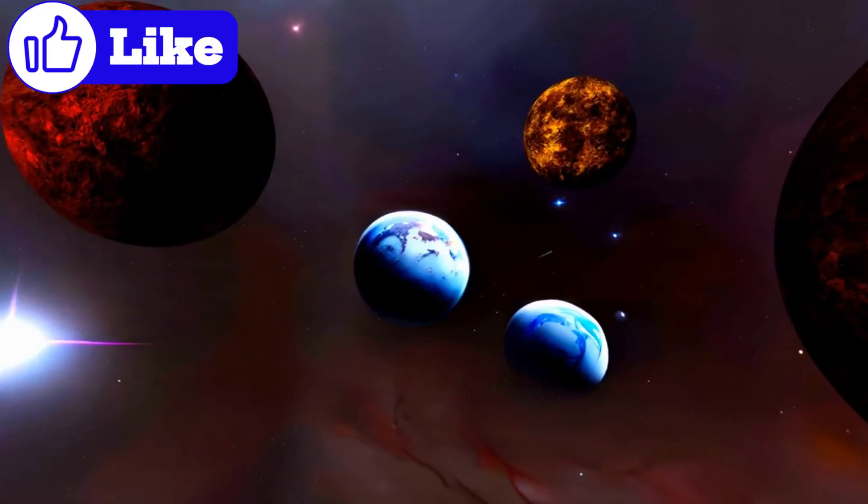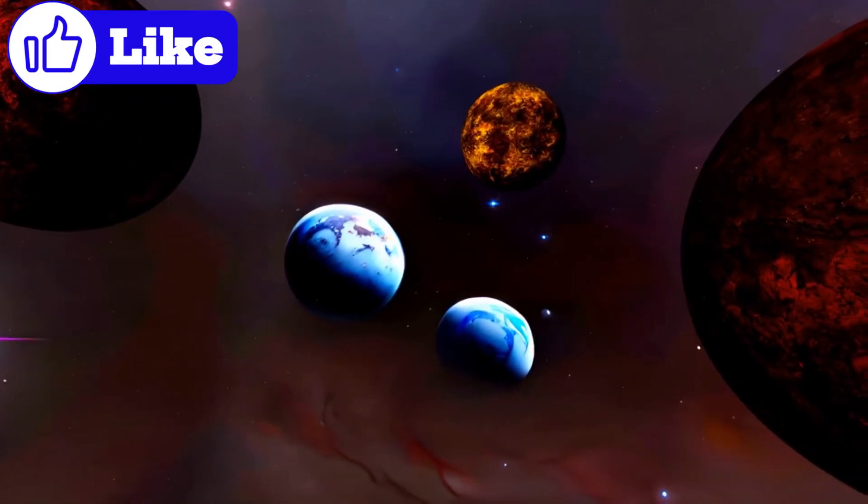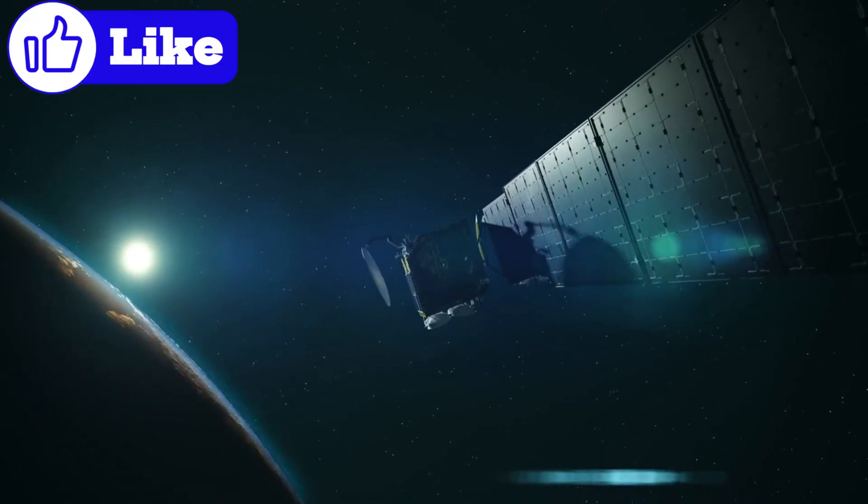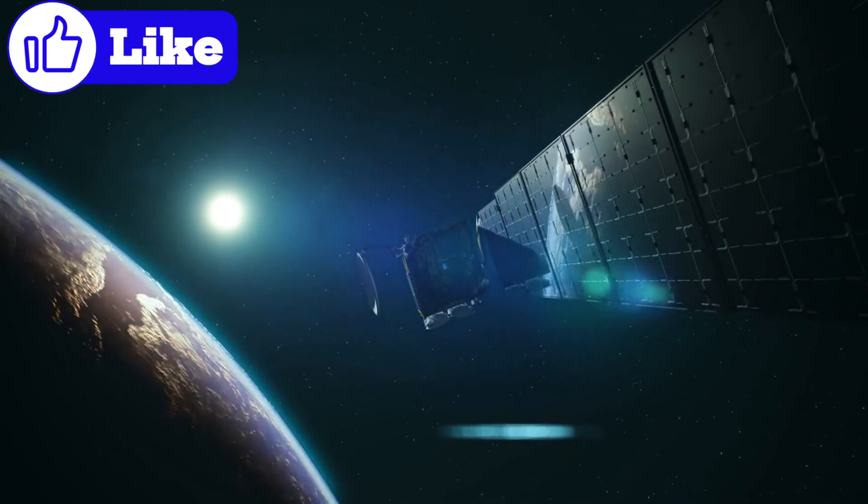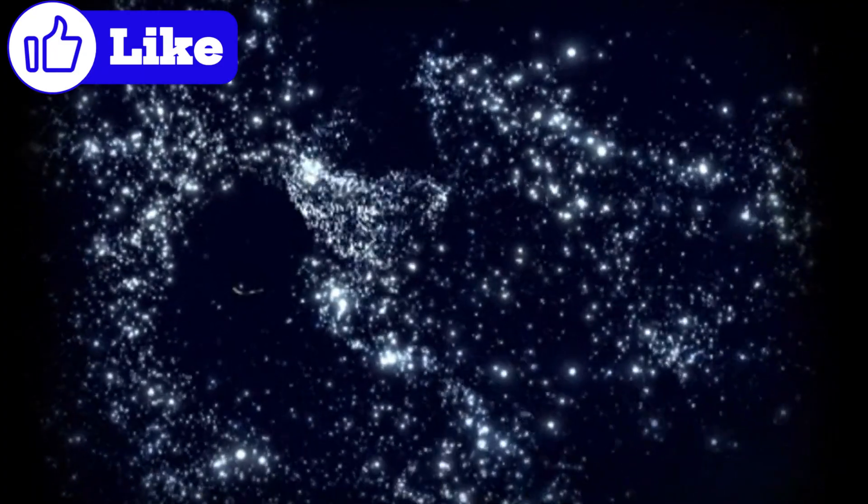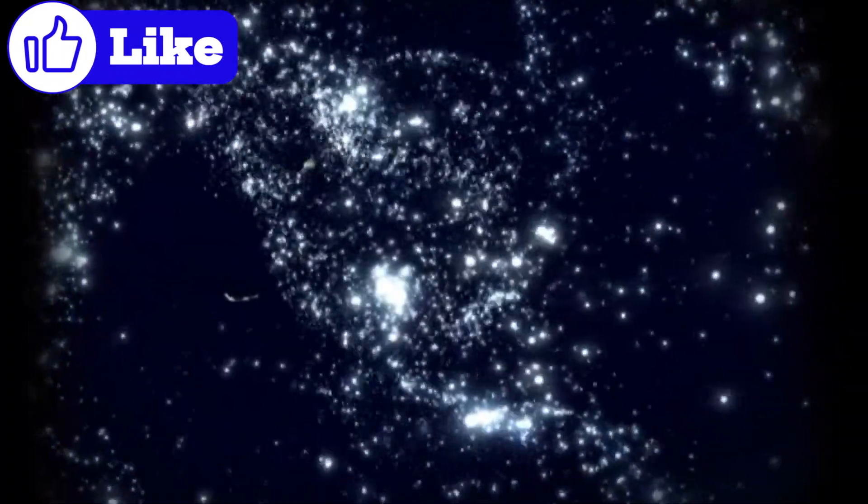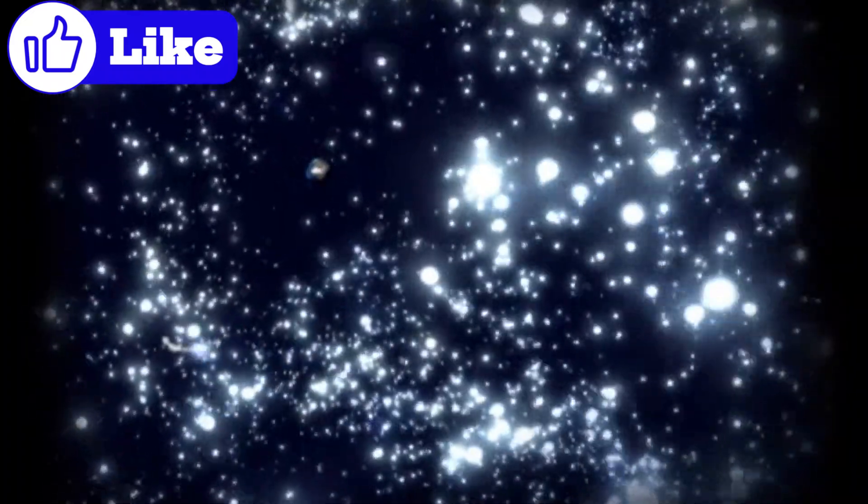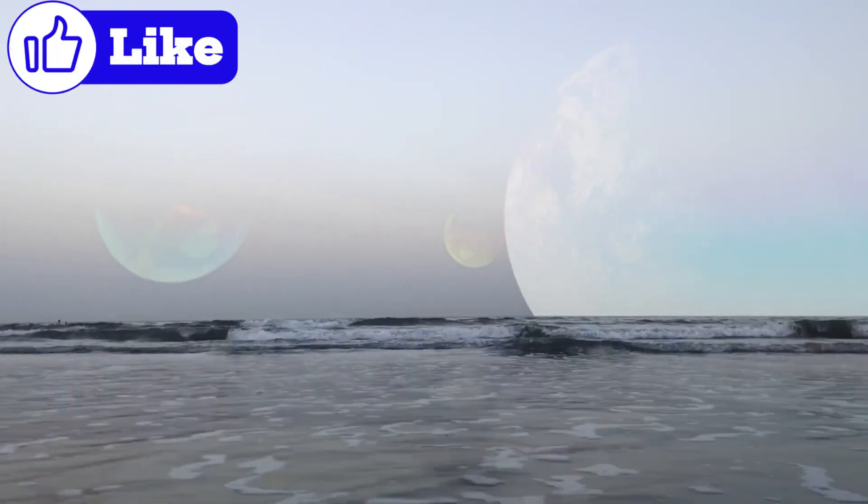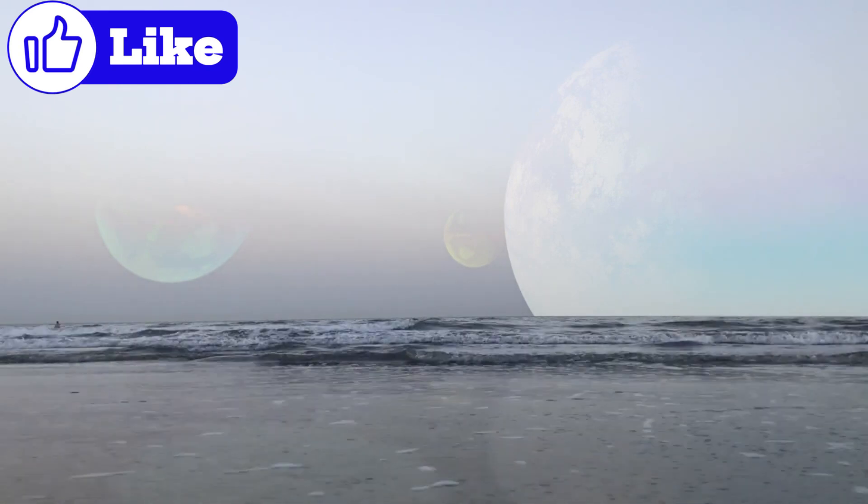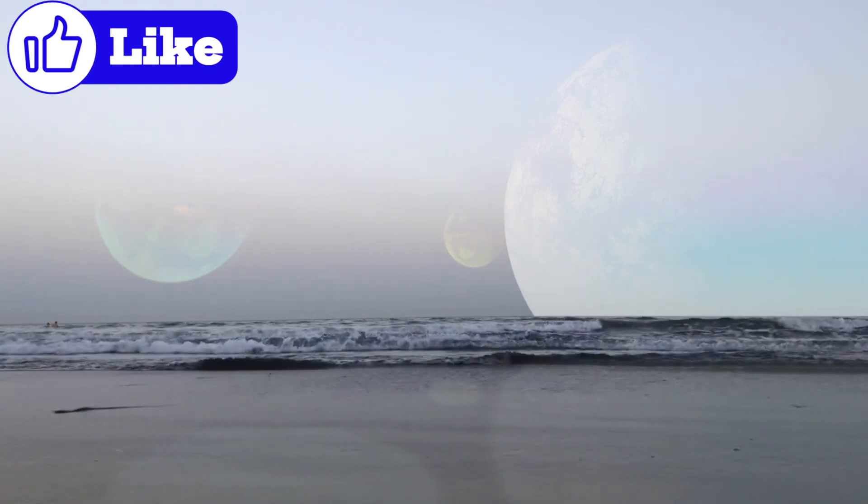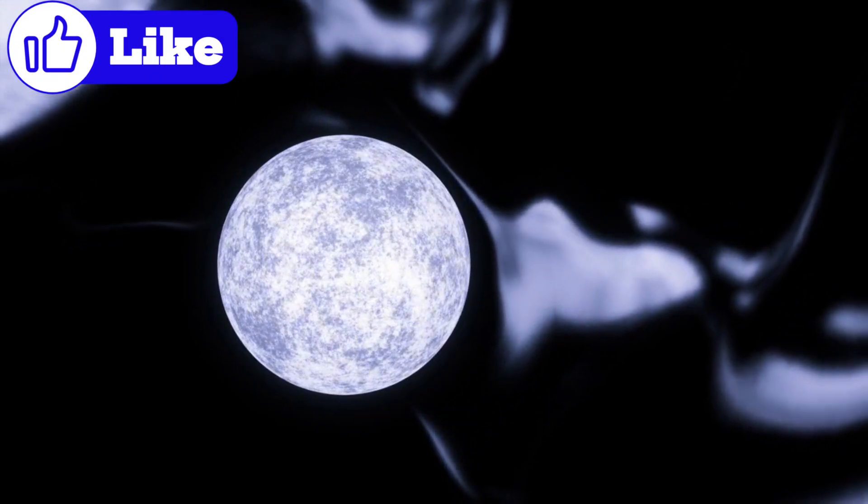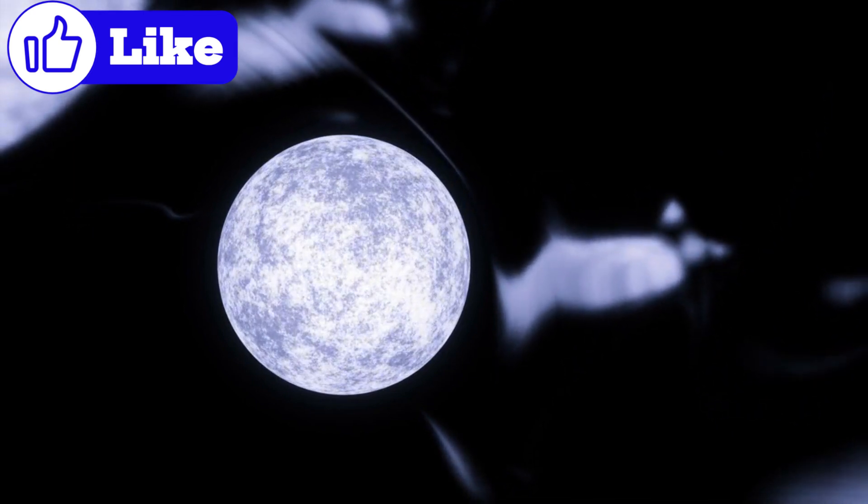The potential for life on these planets or their moons further amplifies their significance. If the jumbos have atmospheres or satellites with conditions similar to those theorized for habitability, they could provide key insights into the possibility of life existing in environments vastly different from Earth's. The idea of life thriving on moons with subsurface oceans or within the upper atmospheres of giant planets opens new frontiers in the search for extraterrestrial organisms.